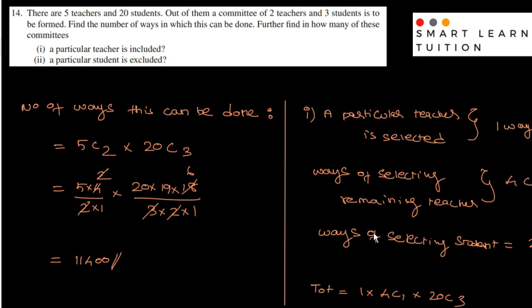Hello students, welcome back to Smart Learn Tuition. Question number 14. There are 5 teachers and 20 students. Out of them, a committee of 2 teachers and 3 students is to be formed.